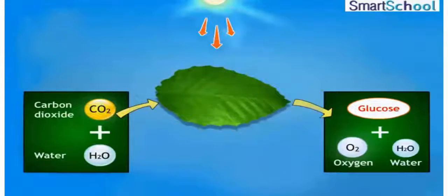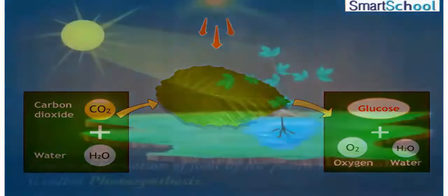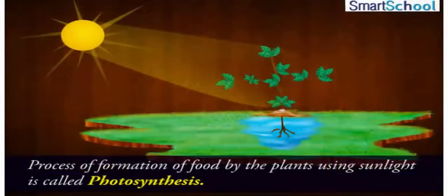Using sunlight as the source of energy, plants convert the simple substances, that is carbon dioxide and water, into complex substance, that is glucose. This process of formation of food by the plants using sunlight is called photosynthesis.